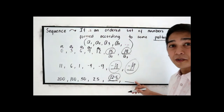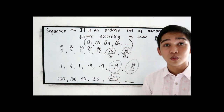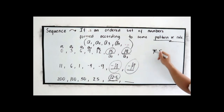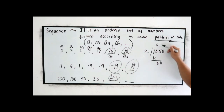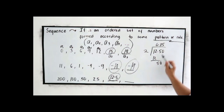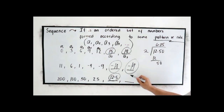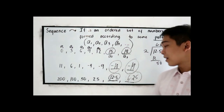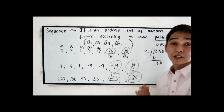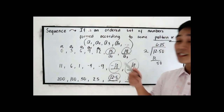To get the next term after 12.5, we compute 12.5 divided by 2, which gives us 6.25. So our next term is 6.25. That is the sequence. Again, you will encounter the arithmetic sequence, geometric sequence, harmonic sequence, and the Fibonacci sequence.